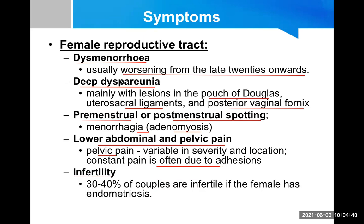One of the most important complications — or symptoms — of endometriosis is infertility. Thirty to forty percent of couples become infertile when the female has endometriosis. The most important reasons are ovarian and fallopian tube involvement.